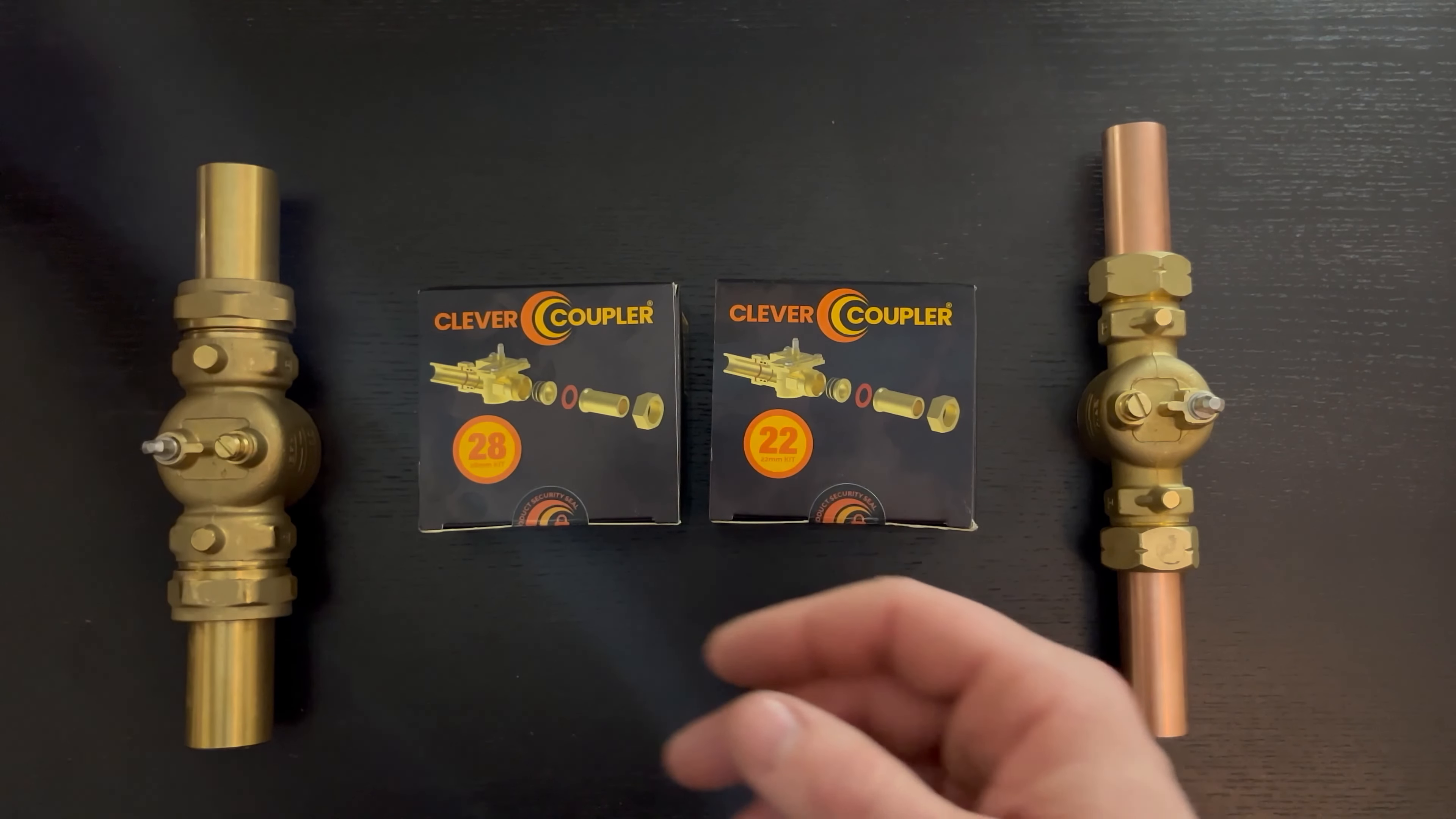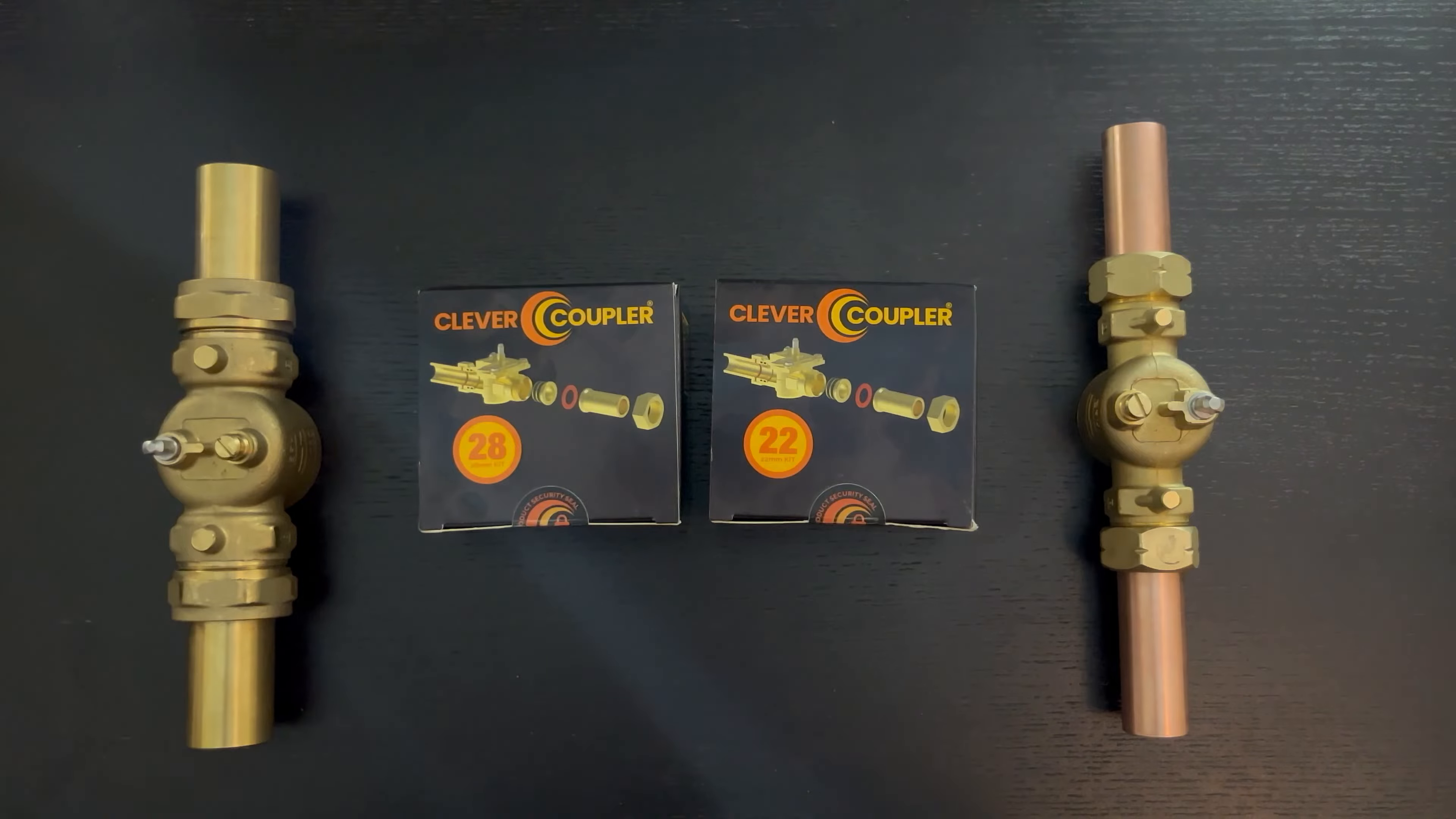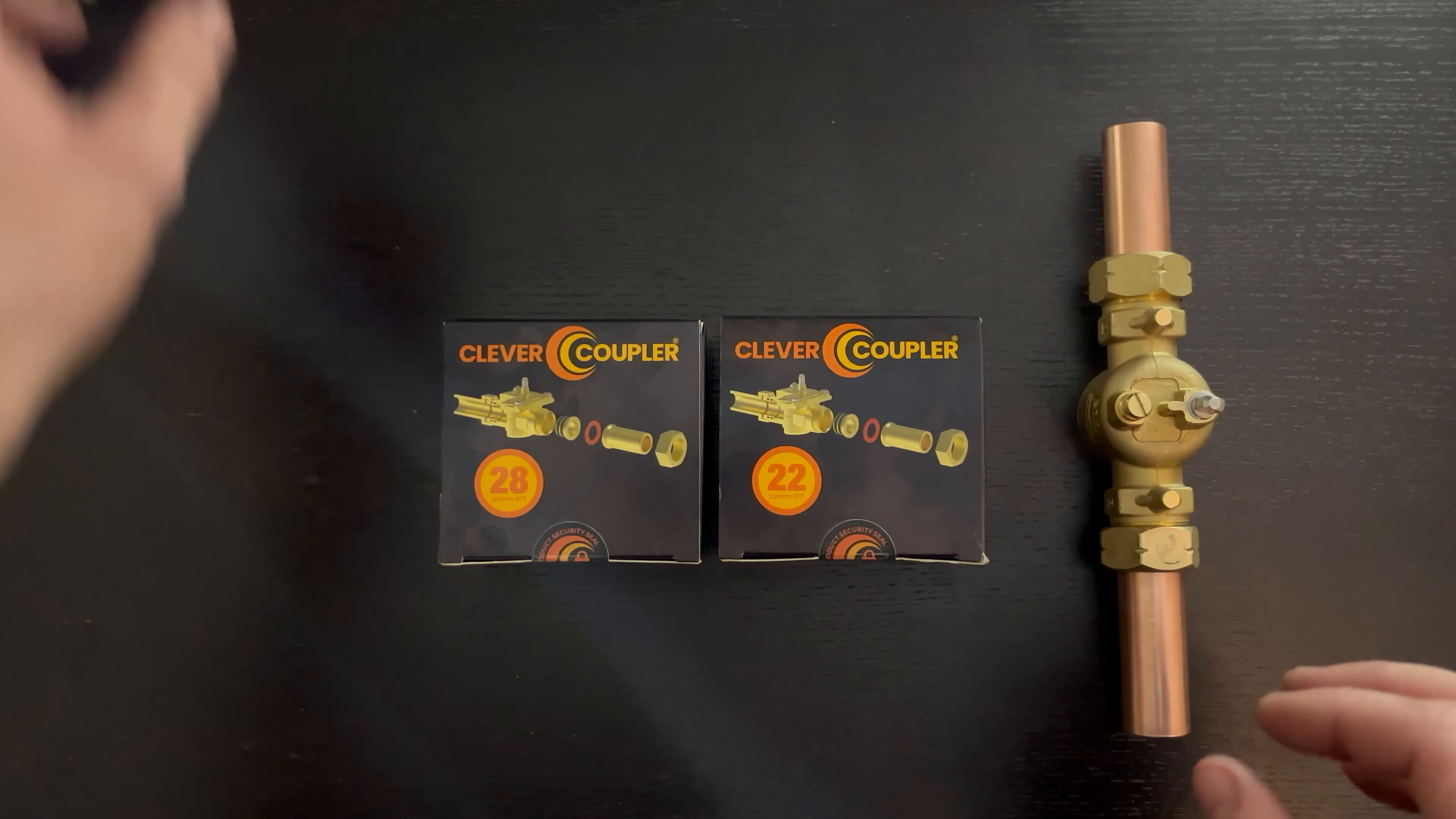The Clever Coupler has been designed to be installed on other types of valves such as blending valves, double check valves, combination valves, etc. It currently comes in 22mm and 28mm versions, but in this particular example I'm going to be using it on a 22mm zone valve.